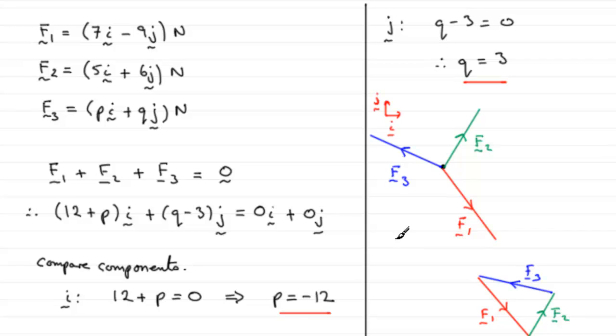So I hope it's given you some extra overview of what's going on here. Okay well there you go. P was minus 12 and Q was 3, just by comparing the components.